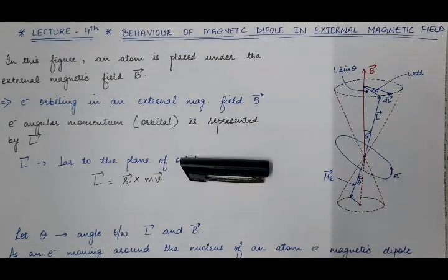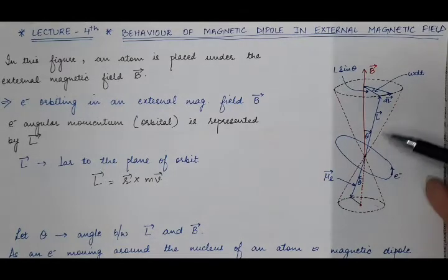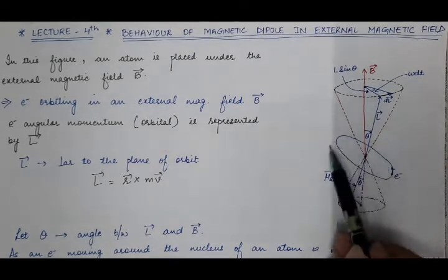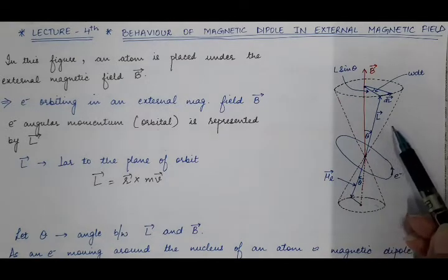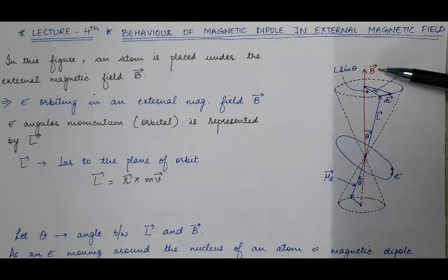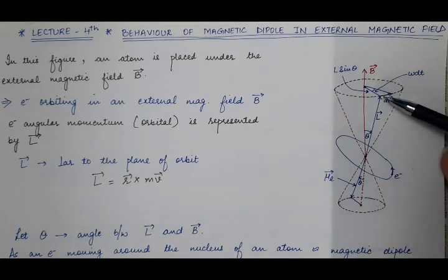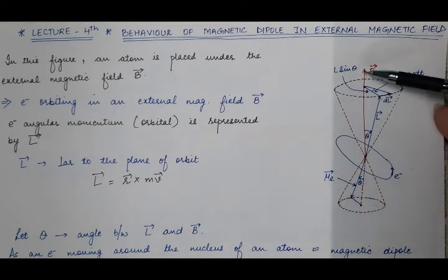If the nucleus, electron, and atom are placed in the XY plane, then the direction of the orbital angular momentum L vector will be perpendicular to that plane — that is, in the Z direction. This atom is placed inside the external magnetic field B vector, and theta is the angle between the orbital angular momentum vector and the external magnetic field B.